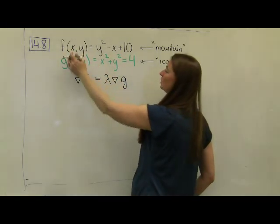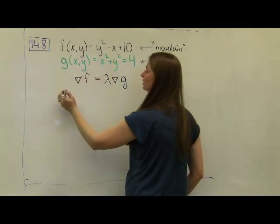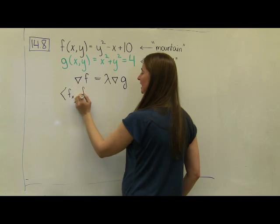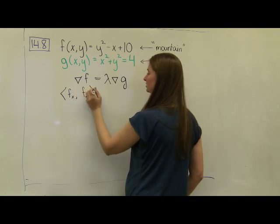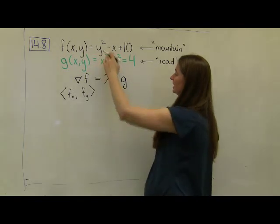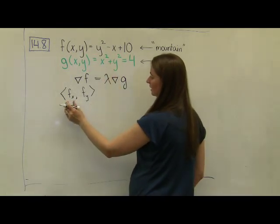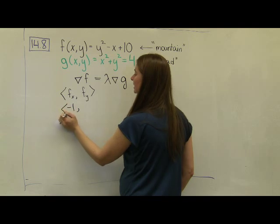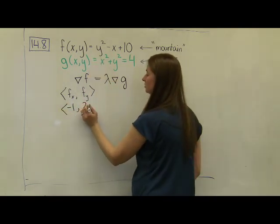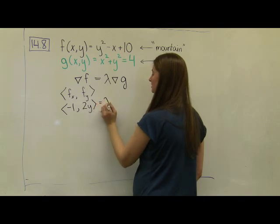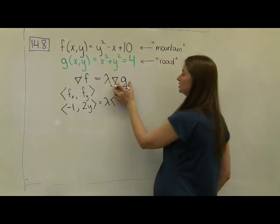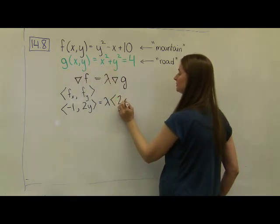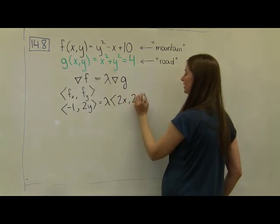Let's recall: the gradient of f is the partial derivative of f with respect to x in the first component of my vector function, and the partial derivative of f with respect to y in the second component. In this case, the partial with respect to x is just negative 1, and the derivative with respect to y is just 2y. That's going to be set equal to lambda times the gradient of my constraint function, which is the partial with respect to x — that's 2x — and the partial with respect to y, which is 2y.